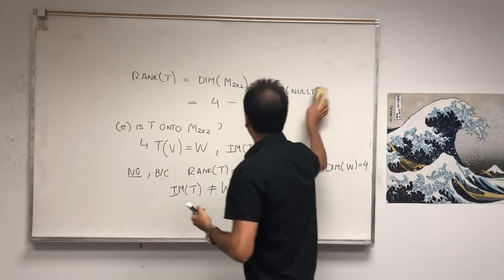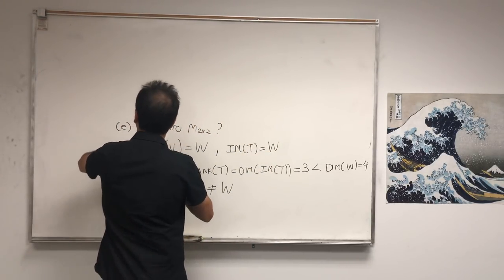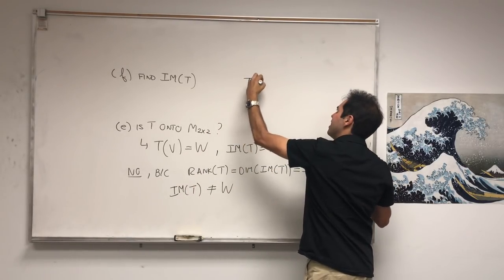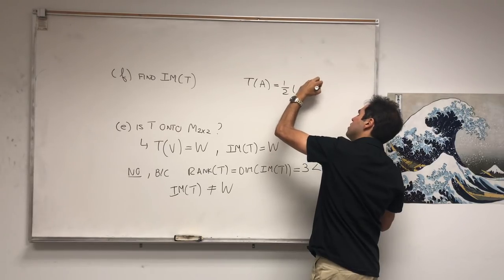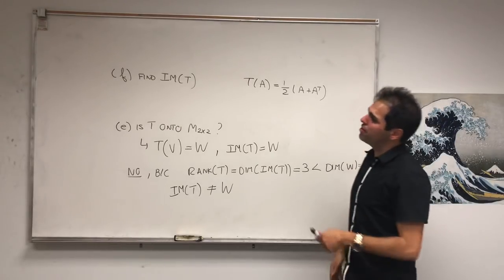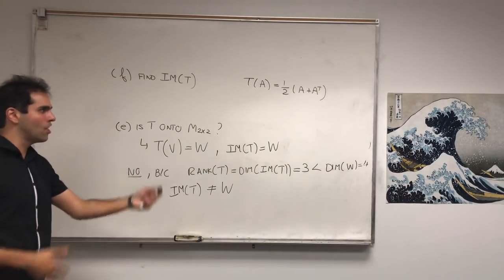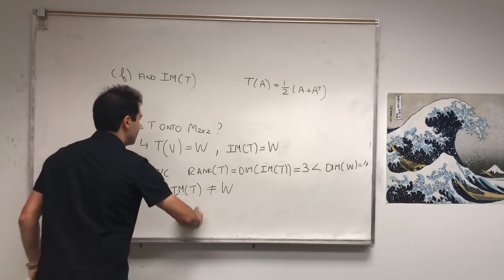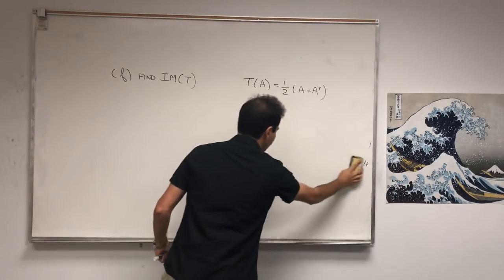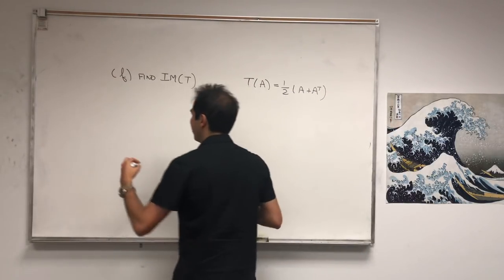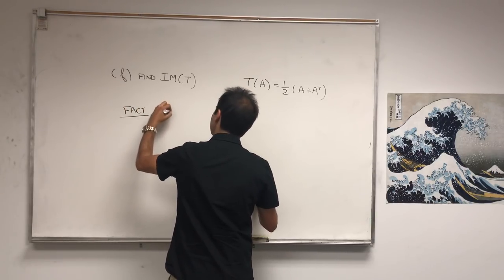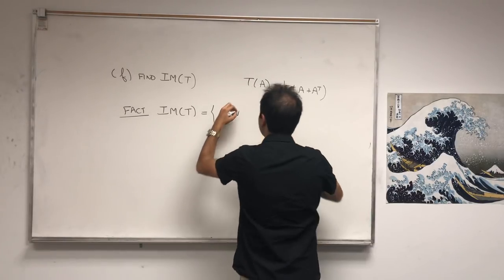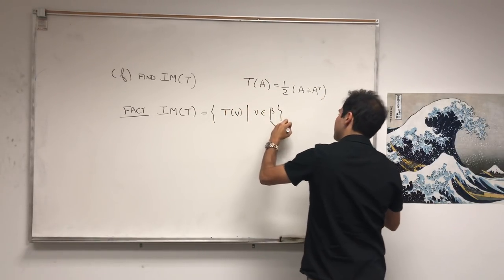Let's find the range of T. Recall T of A is one-half(A + A transpose). In elementary linear algebra you would use pivots to find the column space, but there's a much easier way: all you need to do is calculate T at every basis vector. The image of T is the span of T evaluated at each basis vector, where beta is a basis for V.